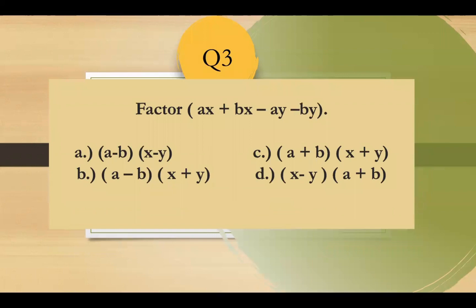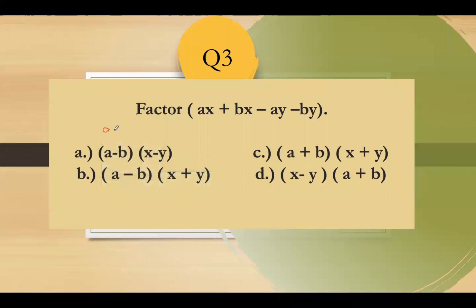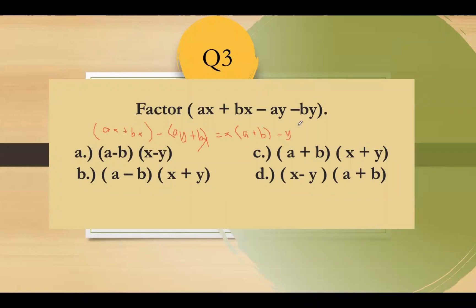Question number 3: get the factor of Ax plus Bx minus Ay minus By. You group the common terms: first group is Ax plus Bx, second group is Ay plus By (transferring the negative outside). Factor by getting the common factor: the first group common factor is x, giving x times (A plus B), and the second group common factor is y, giving y times (A plus B).